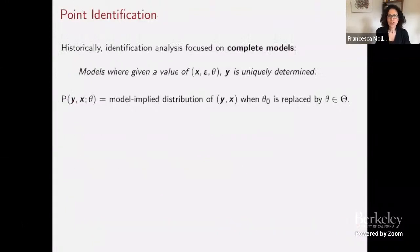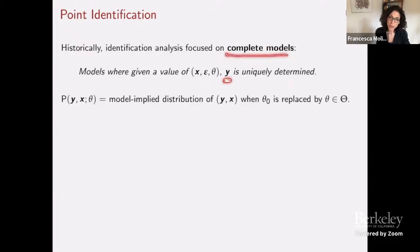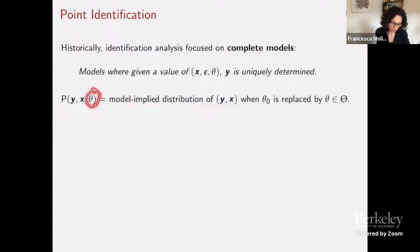Historically, identification analysis has focused on what I'll call complete models — models where given a value of x, epsilon, and theta, the model tells you uniquely what the outcome is. In such models, because there is a uniquely predicted value for outcomes, we also have a unique model-implied distribution of y and x associated with each possible value of theta in the parameter space.